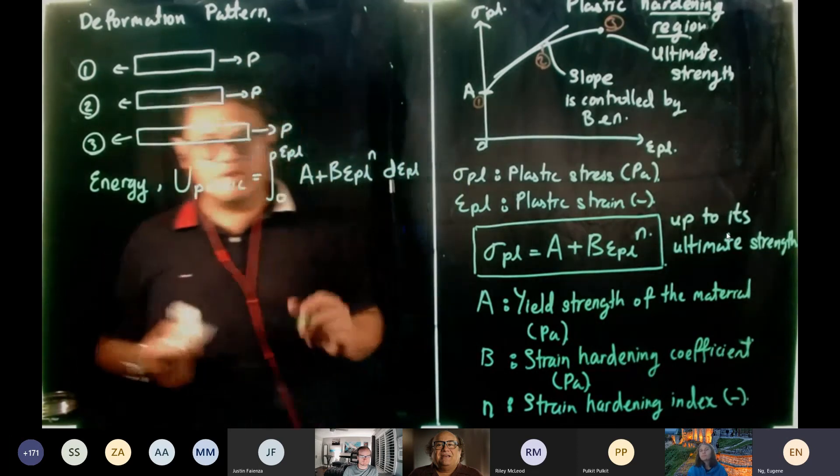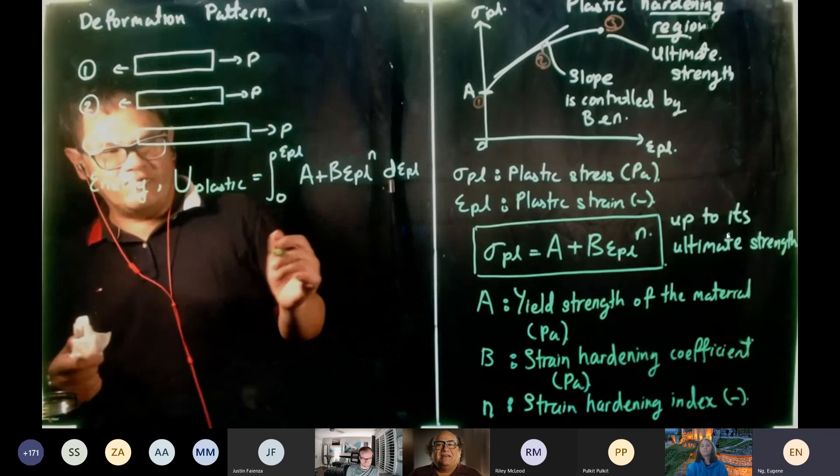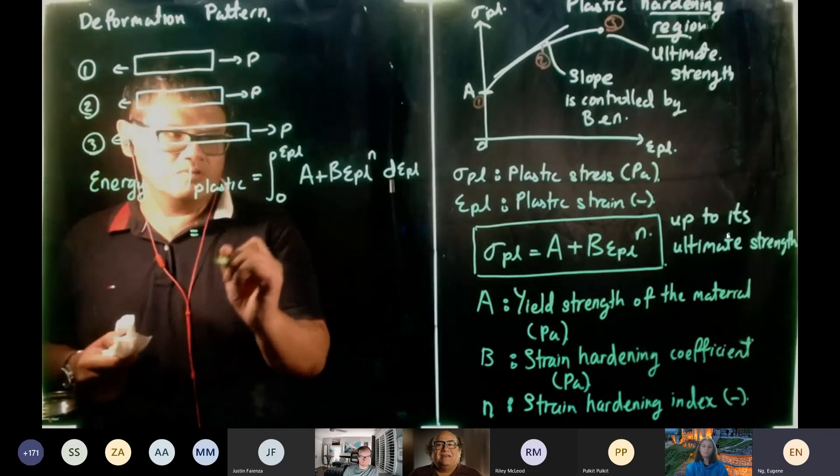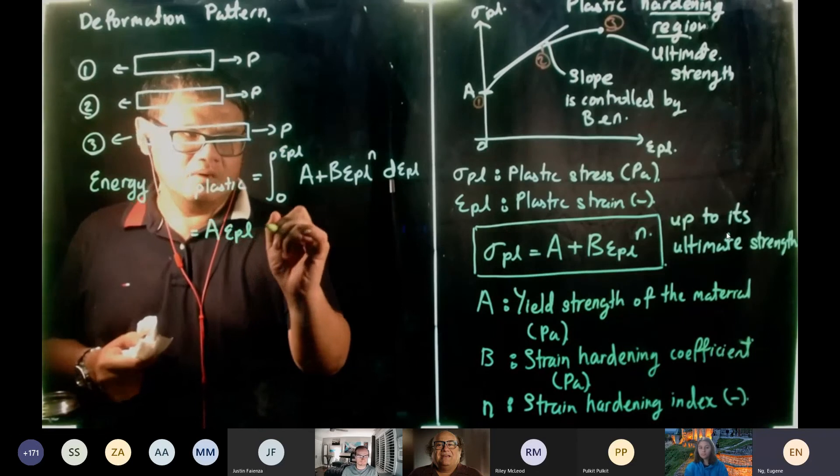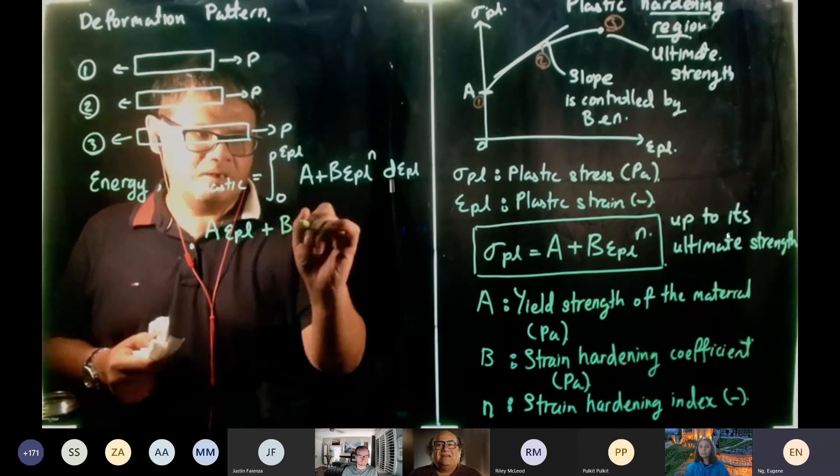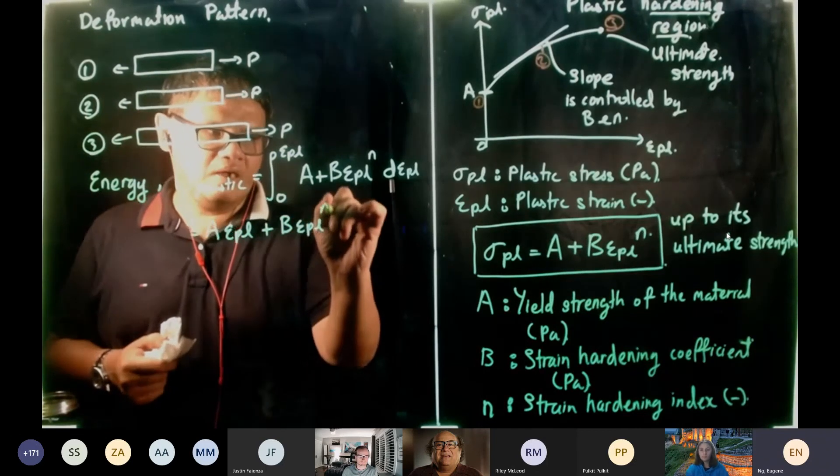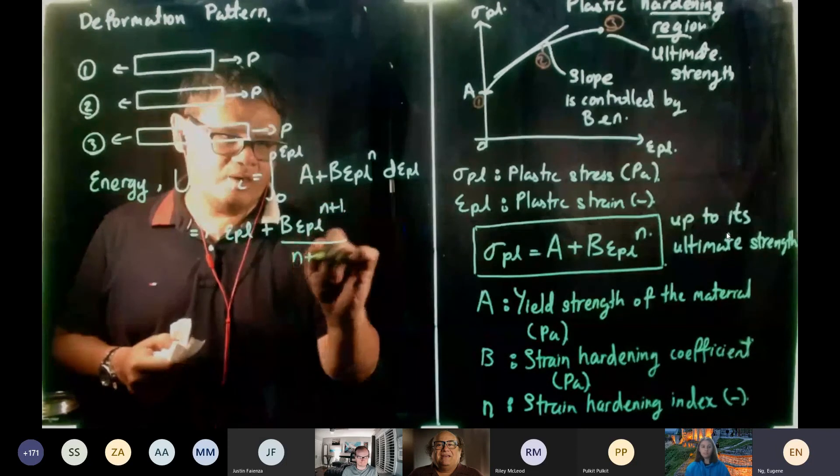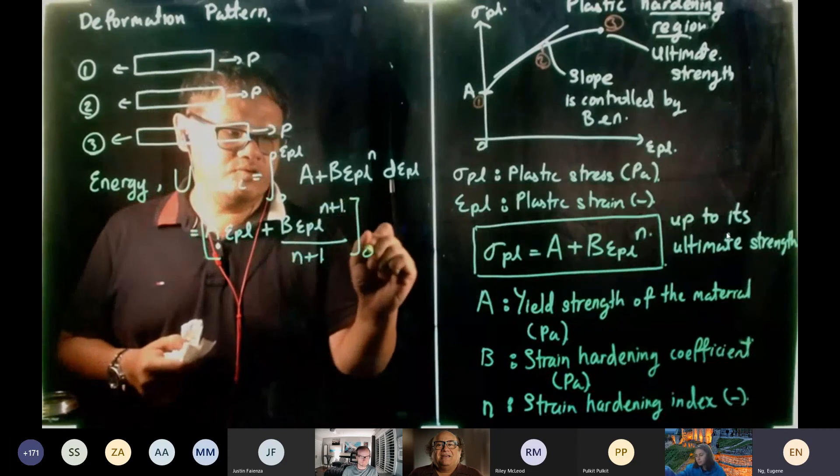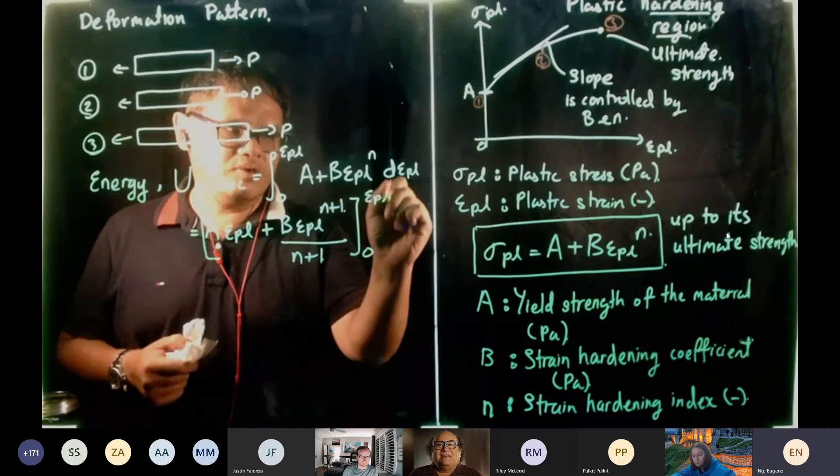So this is equal to A plus B Epsilon PL power N D Epsilon PL. So we just need to integrate very simple math. So this is equal to A Epsilon PL plus B Epsilon PL N plus 1 divided by N plus 1, and then bounded from 0 to Epsilon to the plastic strain.